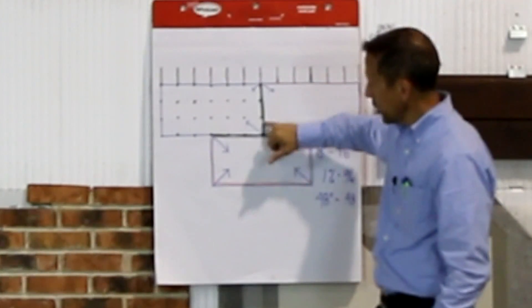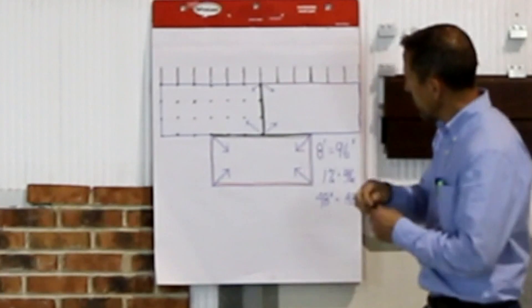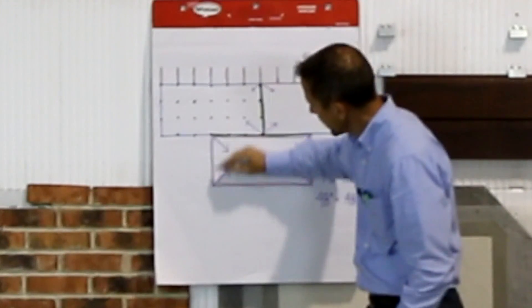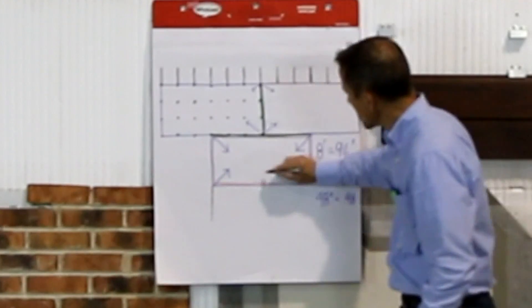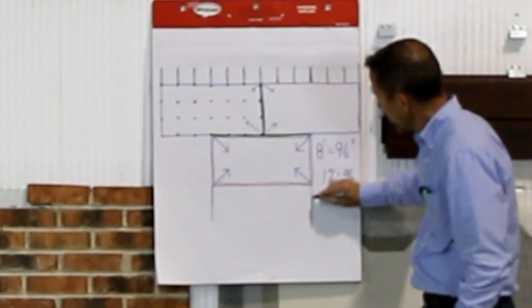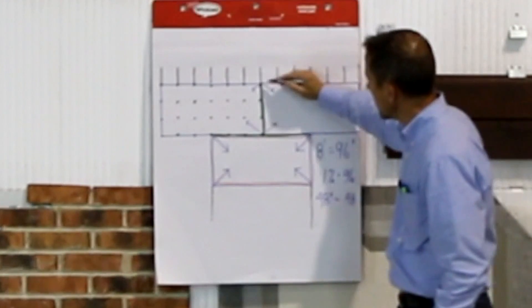And, critically, these open joints occur at the weakest part of the envelope at the stud lines.